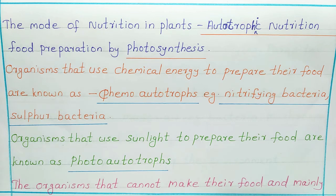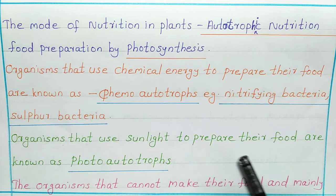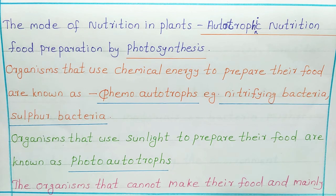Next is photo-autotrophs. Organisms that use sunlight to prepare their food are known as photo-autotrophs. All green plants are photo-autotrophs.